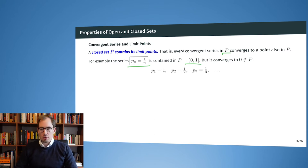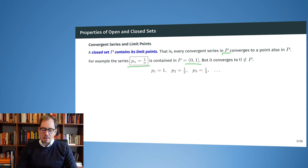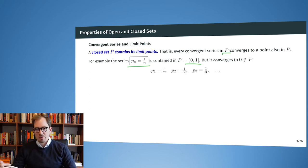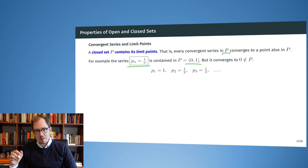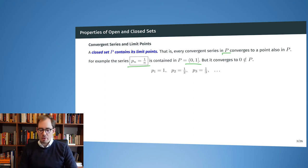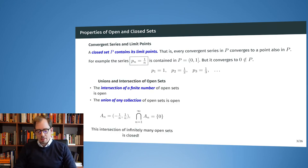Let P equal the points between zero and one where zero is not included — open bracket on the left — but one is included. All our points 1, 1/2, 1/3, ... are included in that set. However, the series converges to zero, which is exactly at the border and is outside of P. So here we have a convergent series where all points are in P but it converges to something outside of P — a case where the set does not contain its limit point.